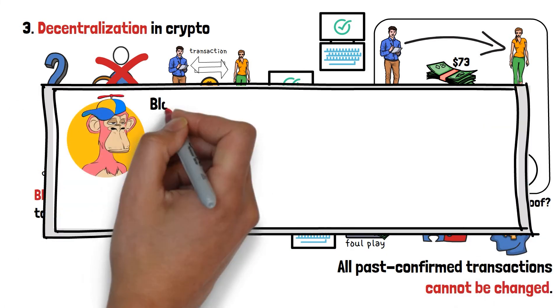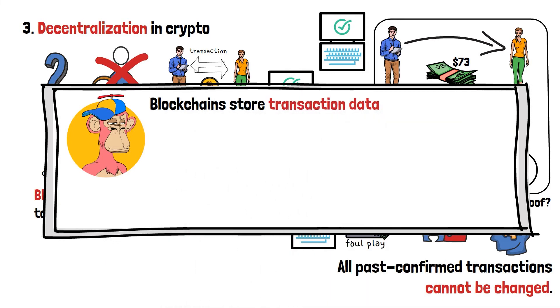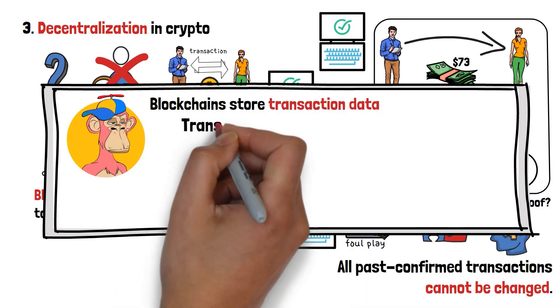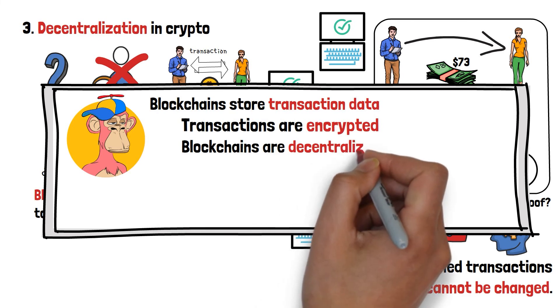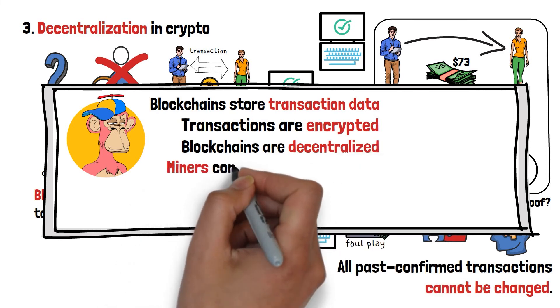So then, up to this point, we figured out that blockchains are virtual chests that store transaction data, and that they are able to encrypt these transactions so that no one could access and tamper with them. We've also covered the topics of decentralization and miners, too.